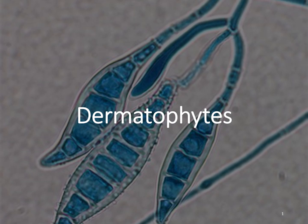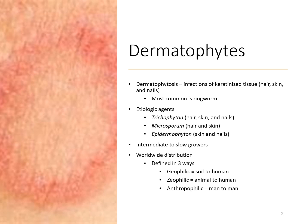This lecture will cover the dermatophytes. The genera of dermatophytes that we will discuss will be Trichophyton, Microsporium, and Epidermophyton. They all cause dermatophytosis, which is an infection of the keratinized tissue which includes the hair, the skin, and the nails.